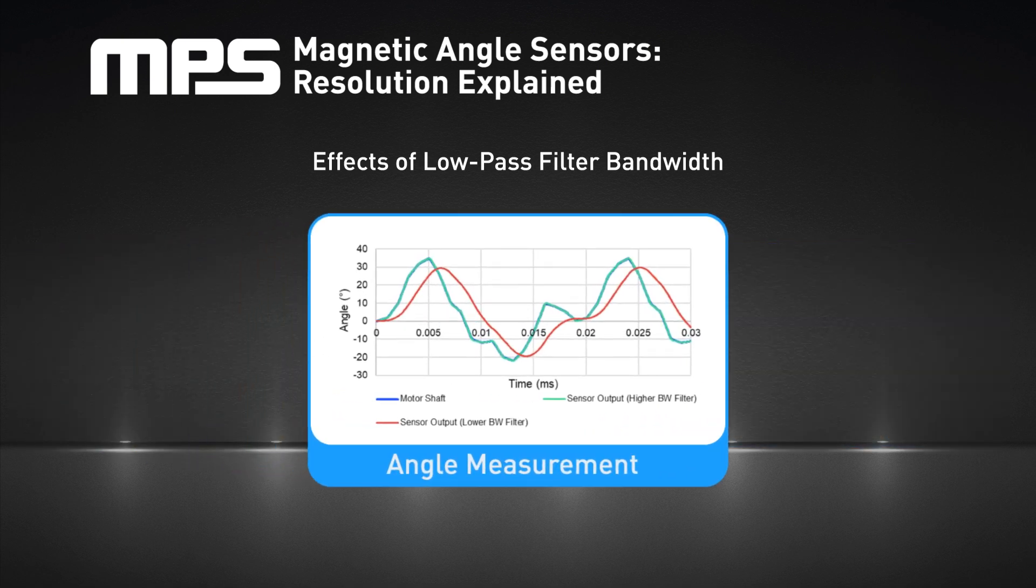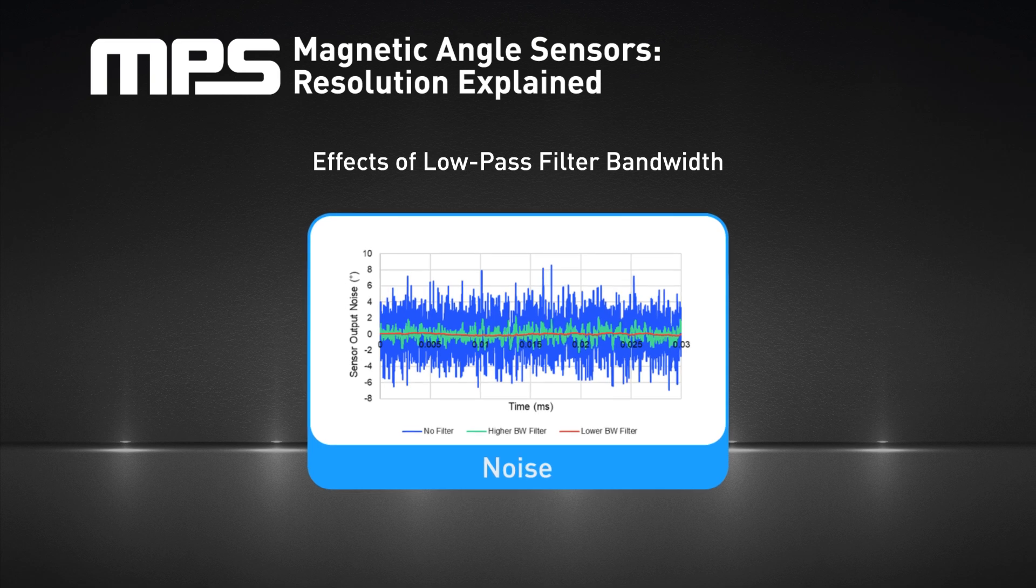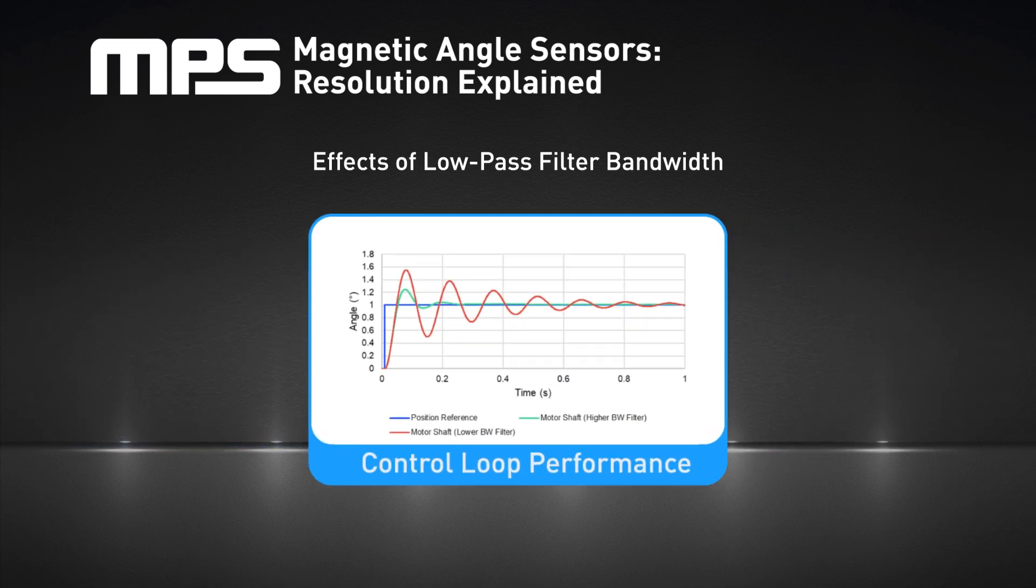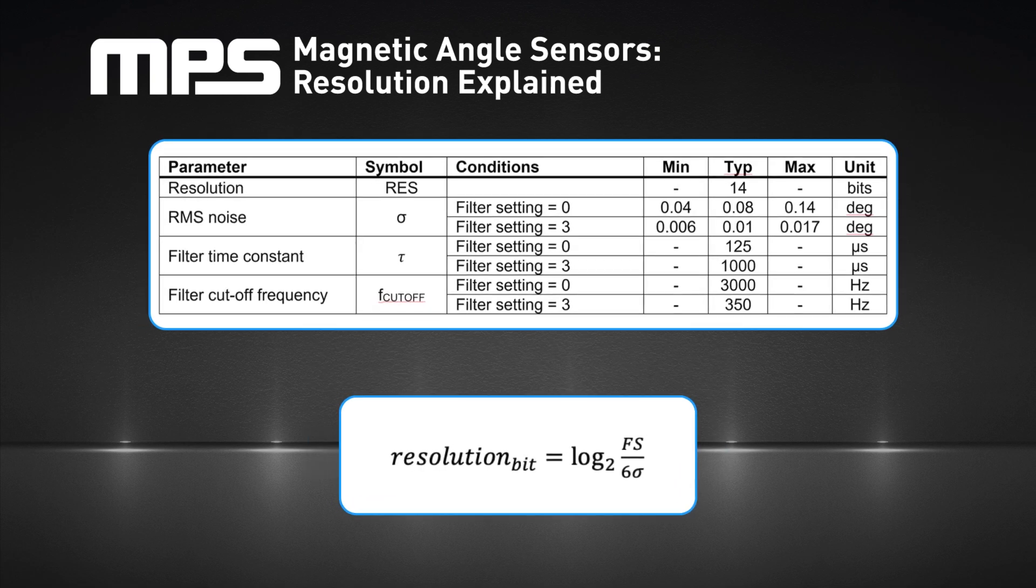This figure shows that the motor shaft angle and sensor output under a high bandwidth filter almost overlap. Meanwhile, the sensor output with a lower bandwidth filter is not able to follow the motor shaft position as accurately. Using a bandwidth filter for the angle significantly reduces the noise. As the bandwidth gets lower, the noise is more attenuated. This figure shows how different filter bandwidths affect motor control loop performance. If a filter has a lower bandwidth, then there is more overshoot and a longer settling time.